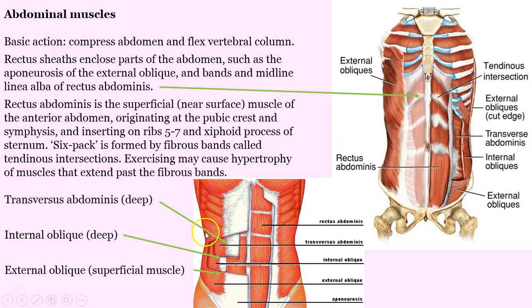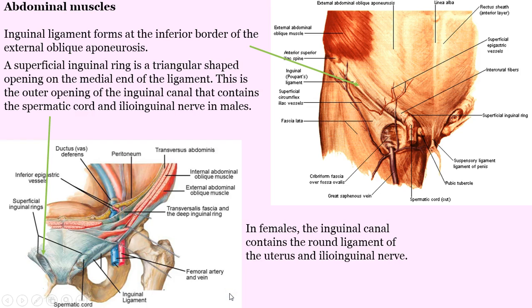The transversus abdominis is deep. Here we have the rectus abdominis — that's the superficial view with the intersections and linea alba. Then if we cut away, we see the transversus abdominis, and the internal oblique is deep. Here's the external oblique. The way to tell these apart is to look at the direction of the muscle fibers — the external oblique is going at an oblique angle in the medial direction, while the other layers have different fiber directions.